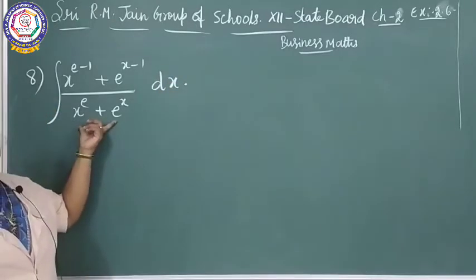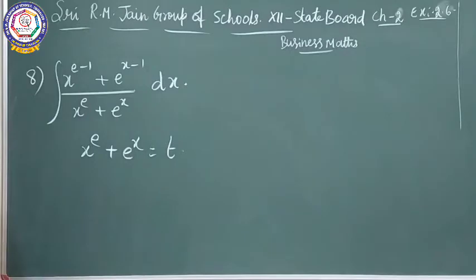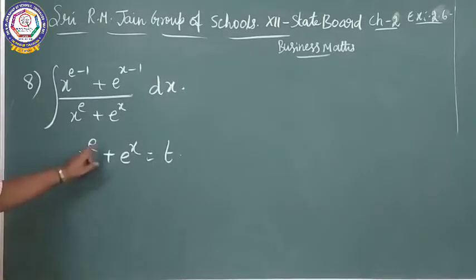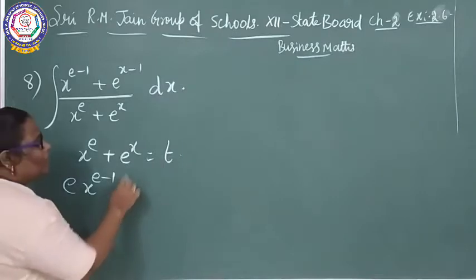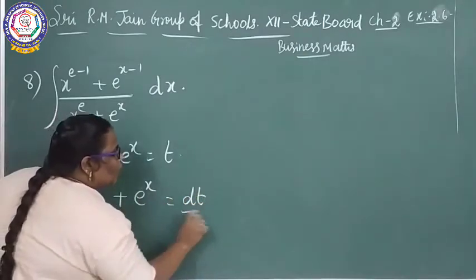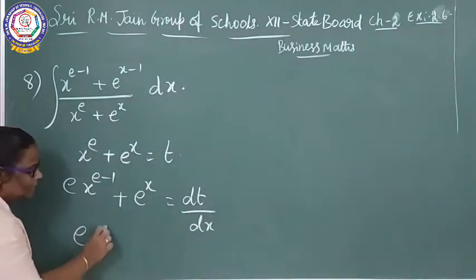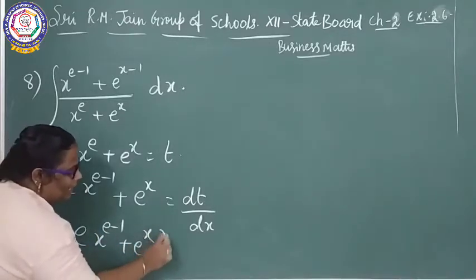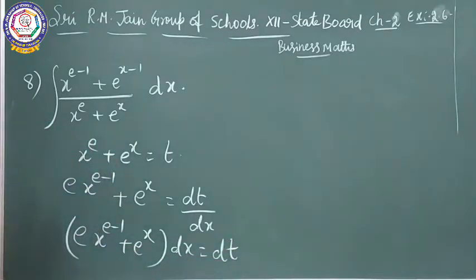You can take the denominator as t. So, x^e plus e^x equal to t. Differentiating: e·x^(e-1) plus e^x equal to dt/dx, so e·x^(e-1) plus e^x into dx equal to dt.